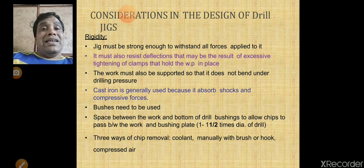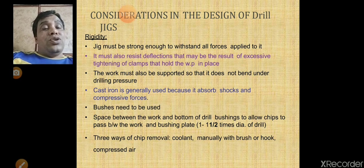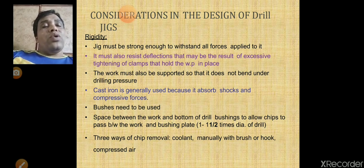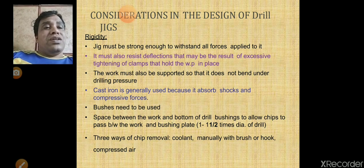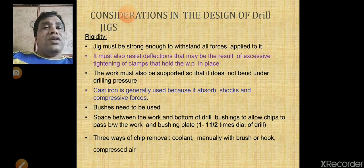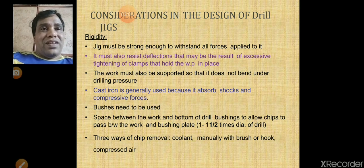Bushes are used to guide the tool. The jig not only guides the tool but also supports and locates the workpiece. For easy removal of chips, there should be a space between the bottom of the drill bushing and the work — approximately 1 to 1.5 times the diameter of the drill. Chips can be removed using coolant, or manually with a hook, brush, or compressed air.